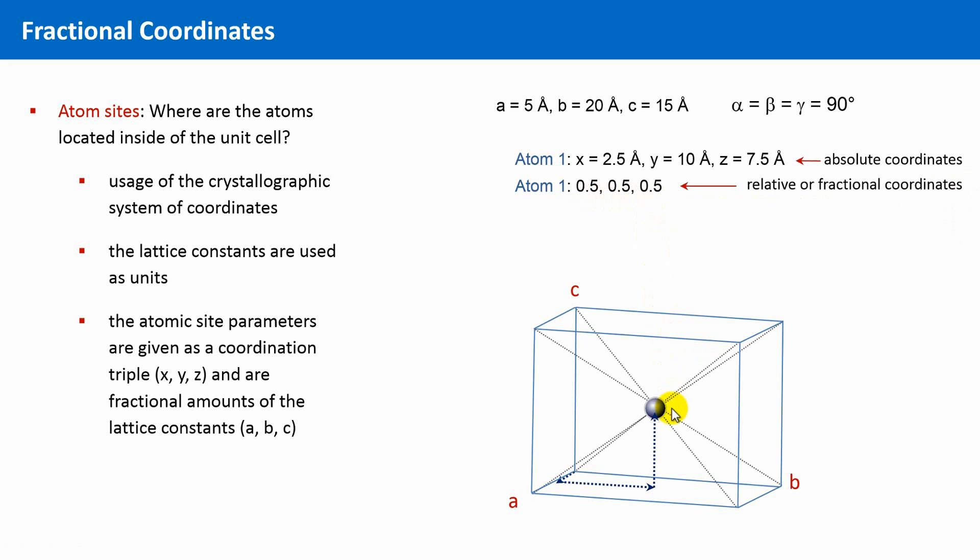There are more such special positions. Atom 2 might be located in this example at x equals 5 angstroms, y equals 10 angstroms and z equals 0 angstroms. In terms of fractional coordinates, this is 1, 0.5 and 0. And we see this is in the middle of an edge, here at the edge along b.